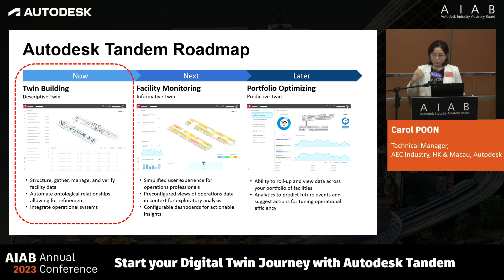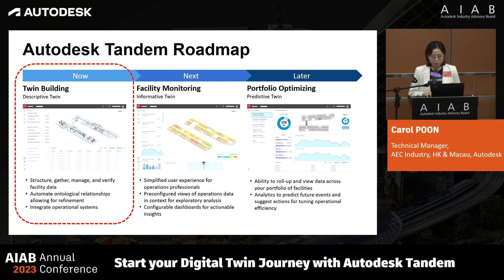This is the roadmap of Autodesk Tandem. The version of Tandem available now is focused on the digital handover workflow for building a digital twin — the descriptive twin. That includes the ability to structure, gather, manage, and verify facility data. We are constantly improving our twin-building features and are working to add more support for automating system relationships, allowing for user refinement, creation and refinement of spaces, and integration with operational systems. We have begun working on informative twin capabilities.